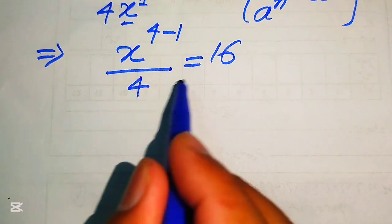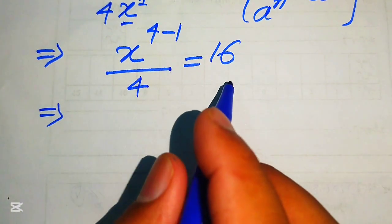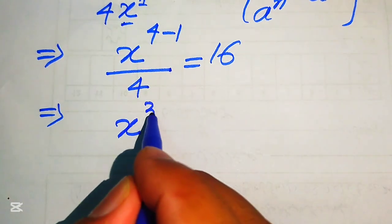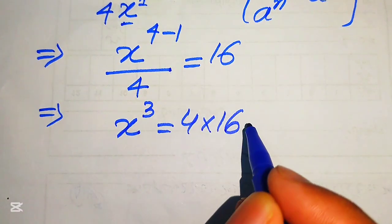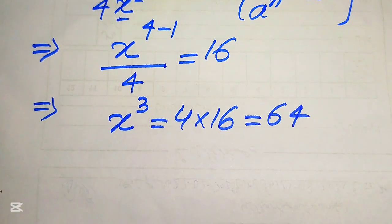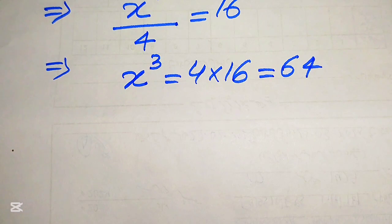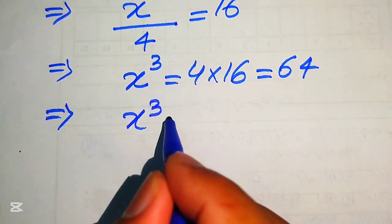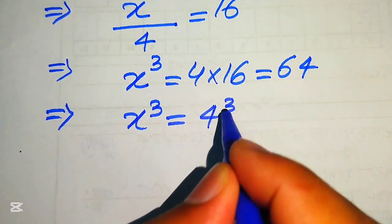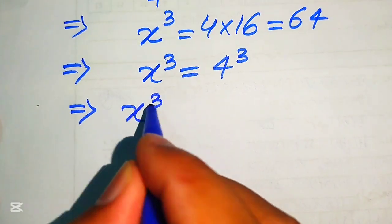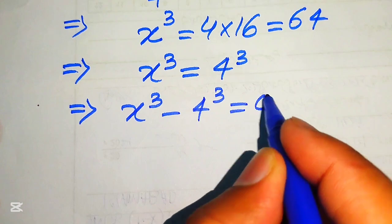Further, in the next step we move this 4 to the right-hand side. When we move it to the right-hand side it is multiplied by 16, so we write it as x to the power of 4 minus 1 equals 4 multiplied by 16. We know that 16 times 4 is 64, so this equation becomes x cubed equals 64. We write 64 as 4 cubed, and moving it to the left-hand side gives x cubed minus 4 cubed equals 0.